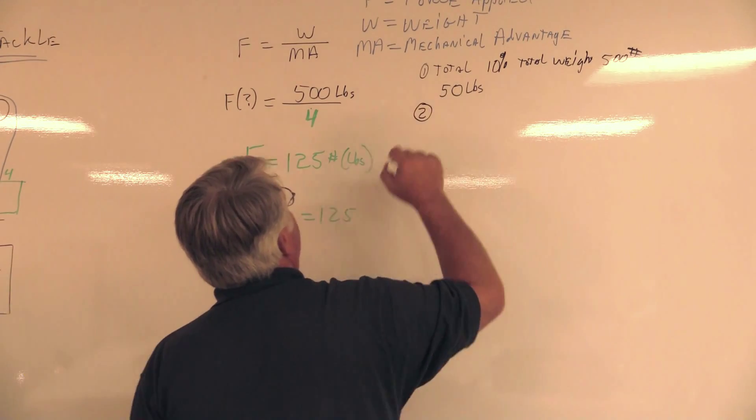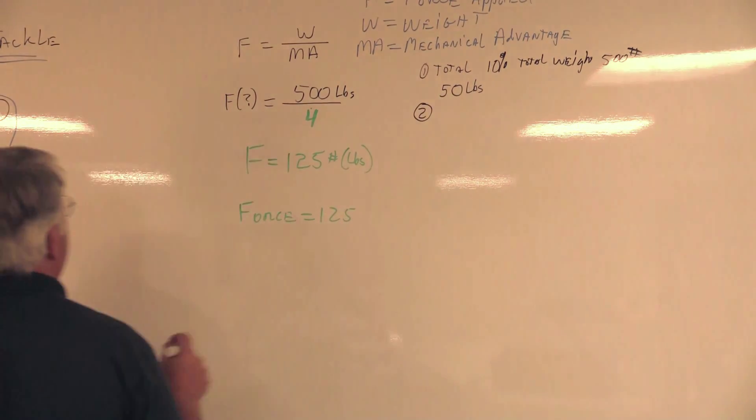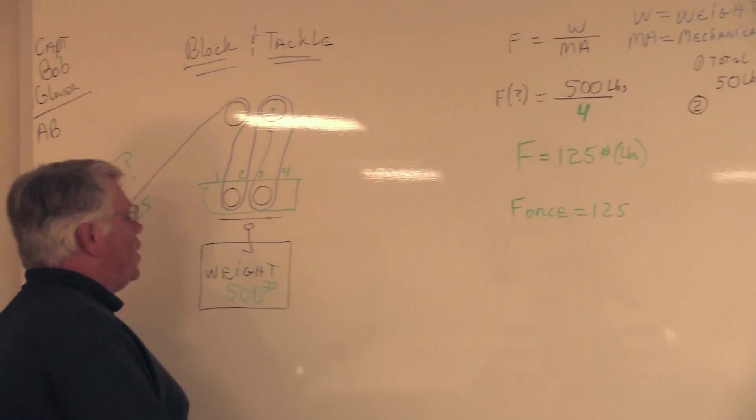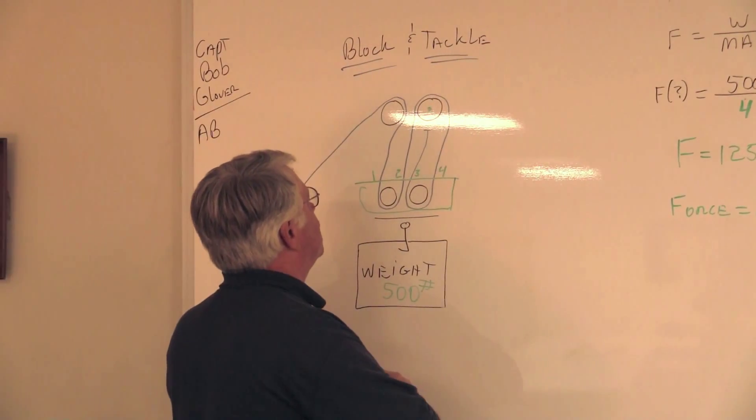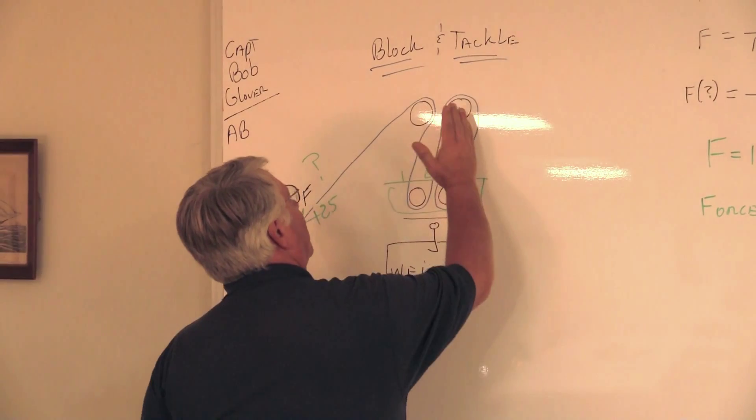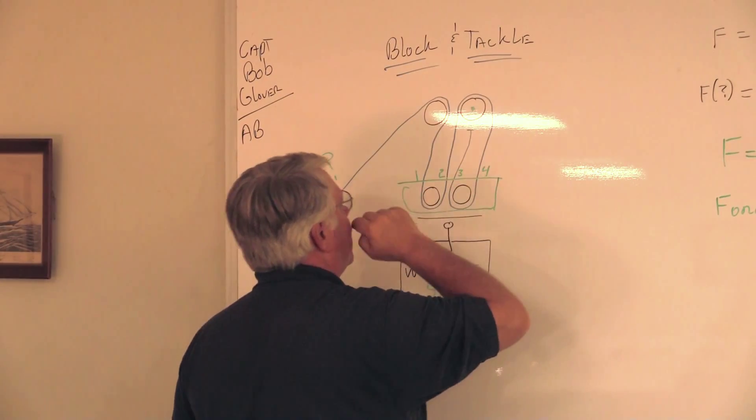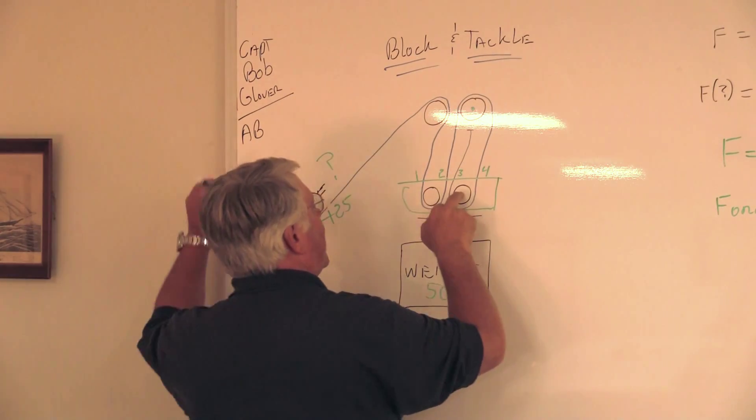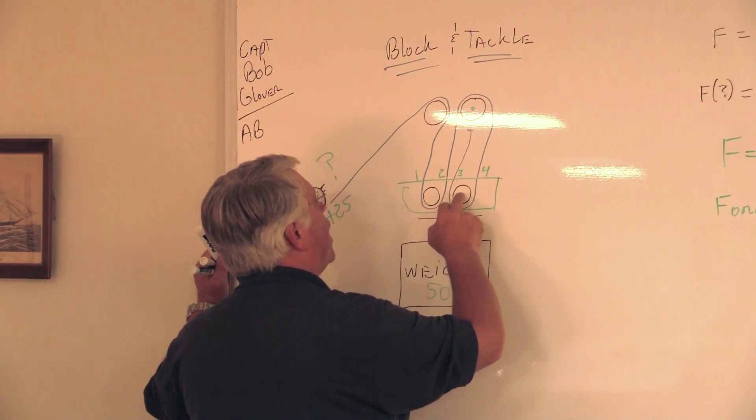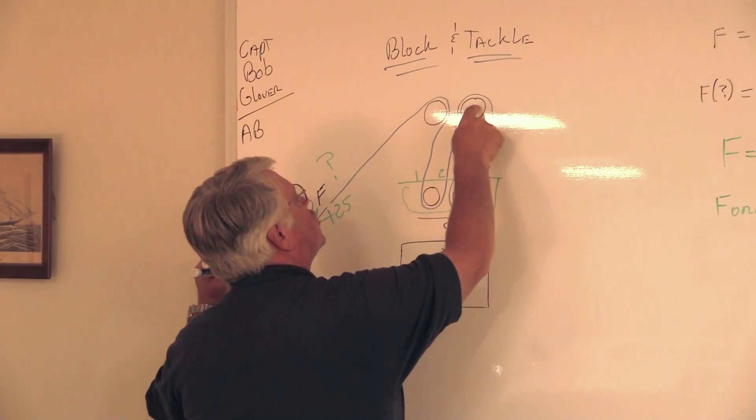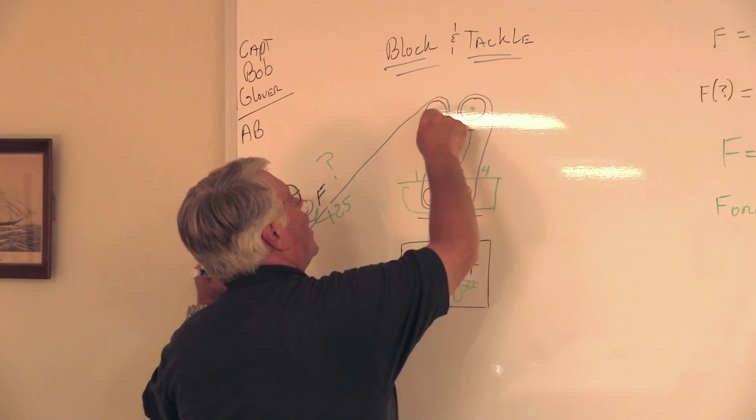Next, we need to take that 50 pounds of frictional loss, and we need to apply it in such a way that we have to go back to our diagram here, our block and tackle, and we have to look at how many effects of that friction are going on.